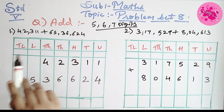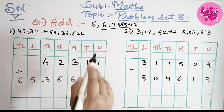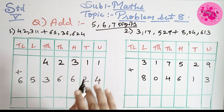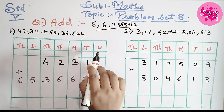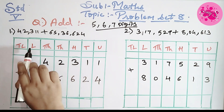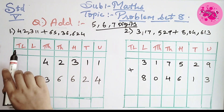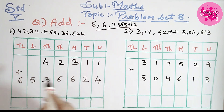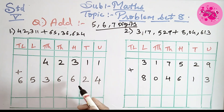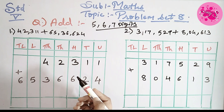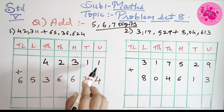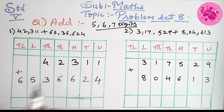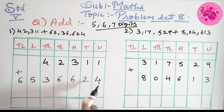To add, we have to draw the box and in that we have to draw the columns — that is units, 10s, 100s, 1000s, 10,000s, lakhs, 10 lakhs. Afterwards we have to write the numbers which are given in the textbook, that is 42,311 plus 65,36,624.